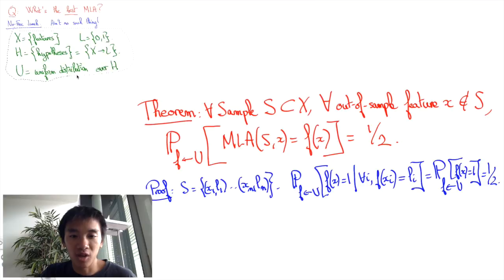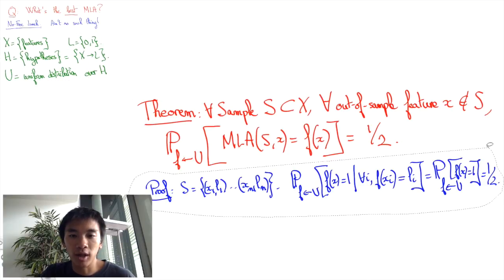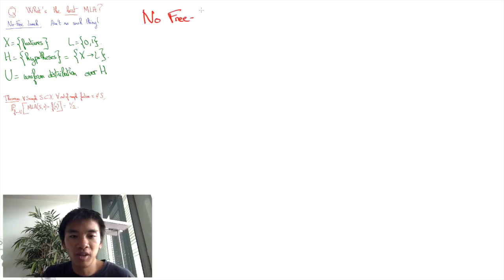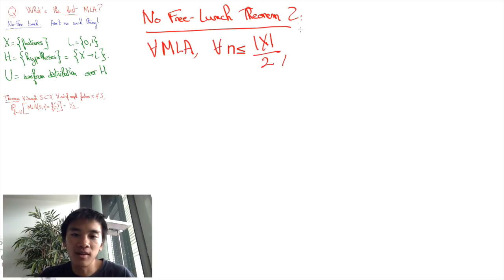Let's move on to the second No-Free-Lunch theorem, which is a corollary of the previous one and has the advantage of not involving a uniform distribution over the hypothesis class. For any machine learning algorithm MLA and any sample size N that's smaller than the cardinal of X divided by 2, there is a real prediction function F of H and a probability distribution D over the set X of features, such that the expected probability of mispredictions over sample sets is at least one-fourth.